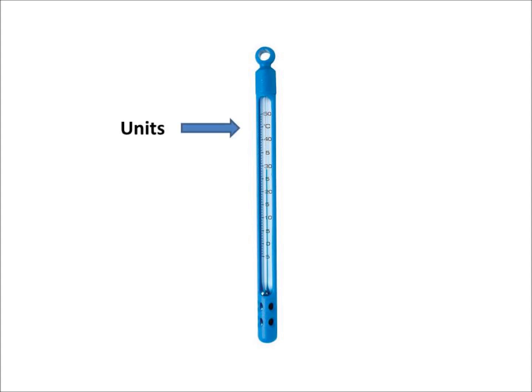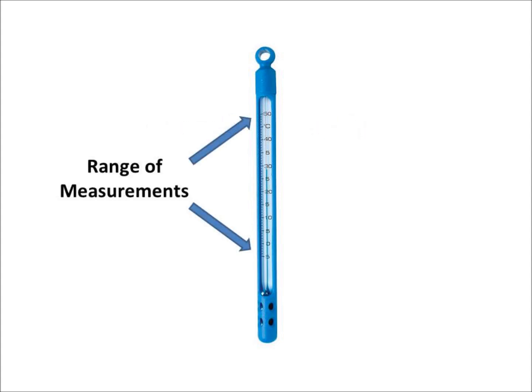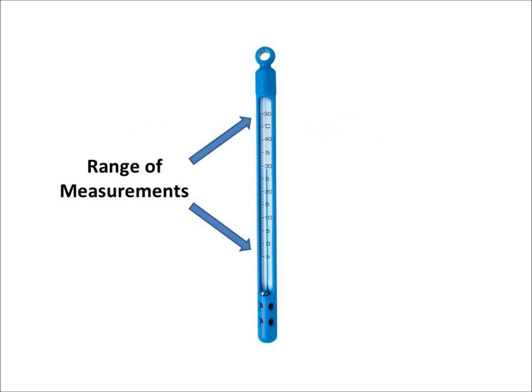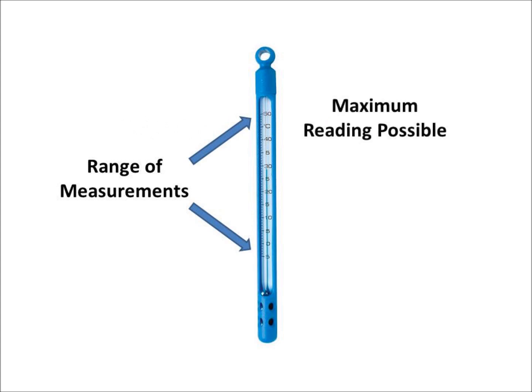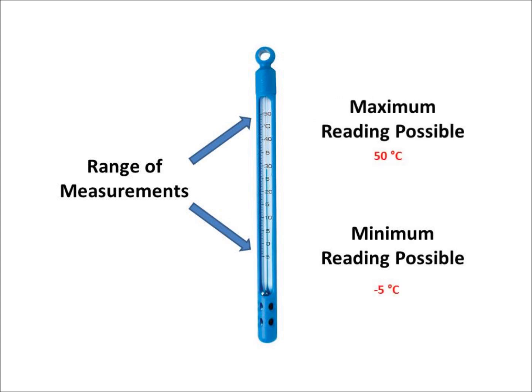Thermometers can measure temperature in various units; this thermometer reads in Celsius. Thermometers can only measure temperatures within a specific range. In this case, the maximum temperature that can be measured is 50 degrees Celsius, and the minimum temperature reading would be negative 5 degrees Celsius.